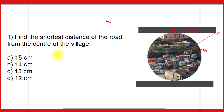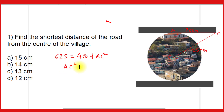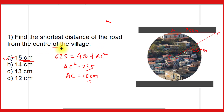We apply the Pythagoras theorem. The square of the hypotenuse, 25 squared, equals 625, which equals the sum of the squares of the other two sides: 20 squared (which is 400) plus CA squared. Taking 400 to the other side gives AC squared equal to 225. Taking the square root of both sides, AC equals 15 centimeters. Therefore option A is correct — 15 centimeters is the shortest distance of the road from the center of the village.